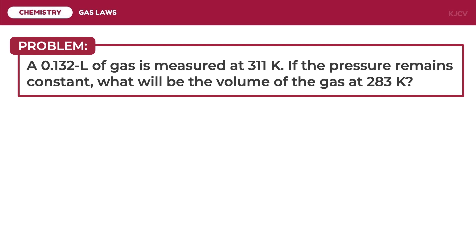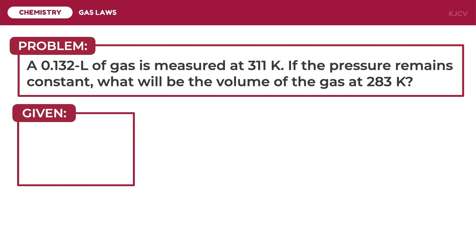For the first problem: a 0.132 liter sample of gas is measured at 311 Kelvin. If the pressure remains constant, what will be the volume of the gas at 283 Kelvin? The first step in answering this problem is to identify the given quantities. We are going to identify the quantities based on the order in which they were mentioned in the problem.